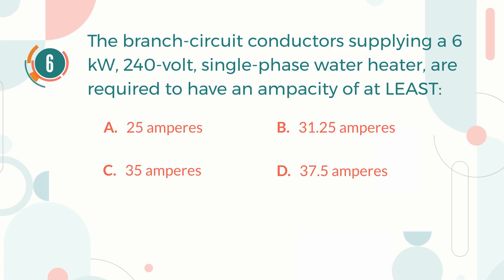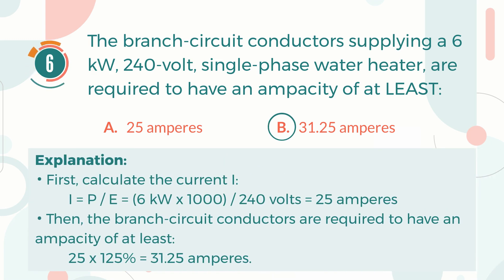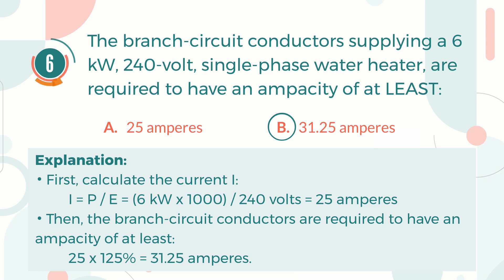The correct answer is B. 31.25 amperes. Explanation: First, calculate the current — power divided by voltage equals 25 amperes. Then, the branch circuit conductors are required to have an ampacity of at least 1.25 times 25 amperes, which is 31.25 amperes.